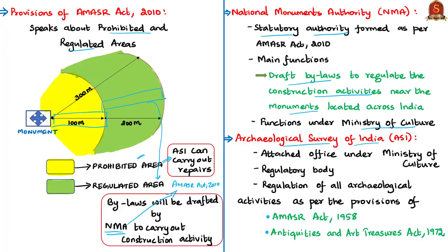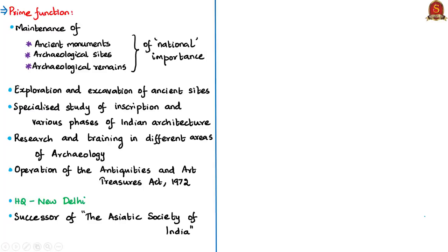The Archaeological Survey of India (ASI) is an attached office under the Ministry of Culture, functioning as a regulatory body. Its main function is regulation of all archaeological activities as per the AMASR Act of 1958 and the Antiquities and Art Treasures Act of 1972. ASI's prime functions include maintenance of ancient monuments, archaeological sites and remains of national importance, exploration and excavation of ancient sites, specialized study of inscriptions and Indian architecture, training in archaeology, and operating the Antiquities and Art Treasures Act. ASI's headquarters is in New Delhi, and it is the successor of the Asiatic Society of India.